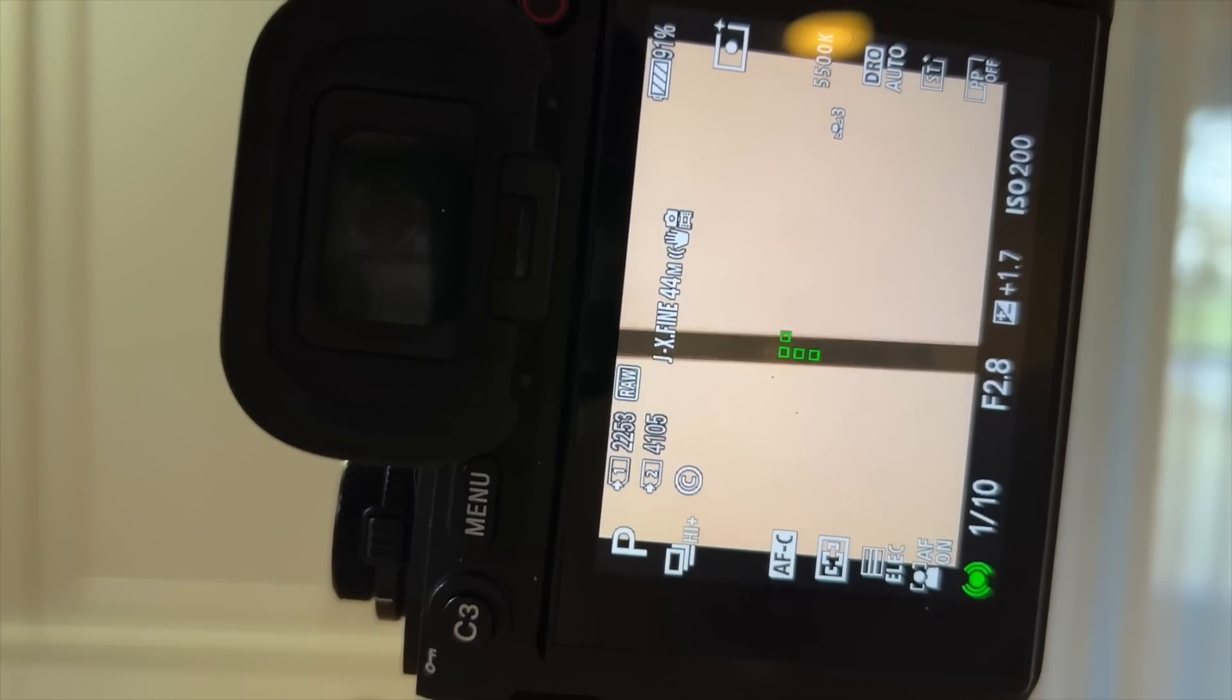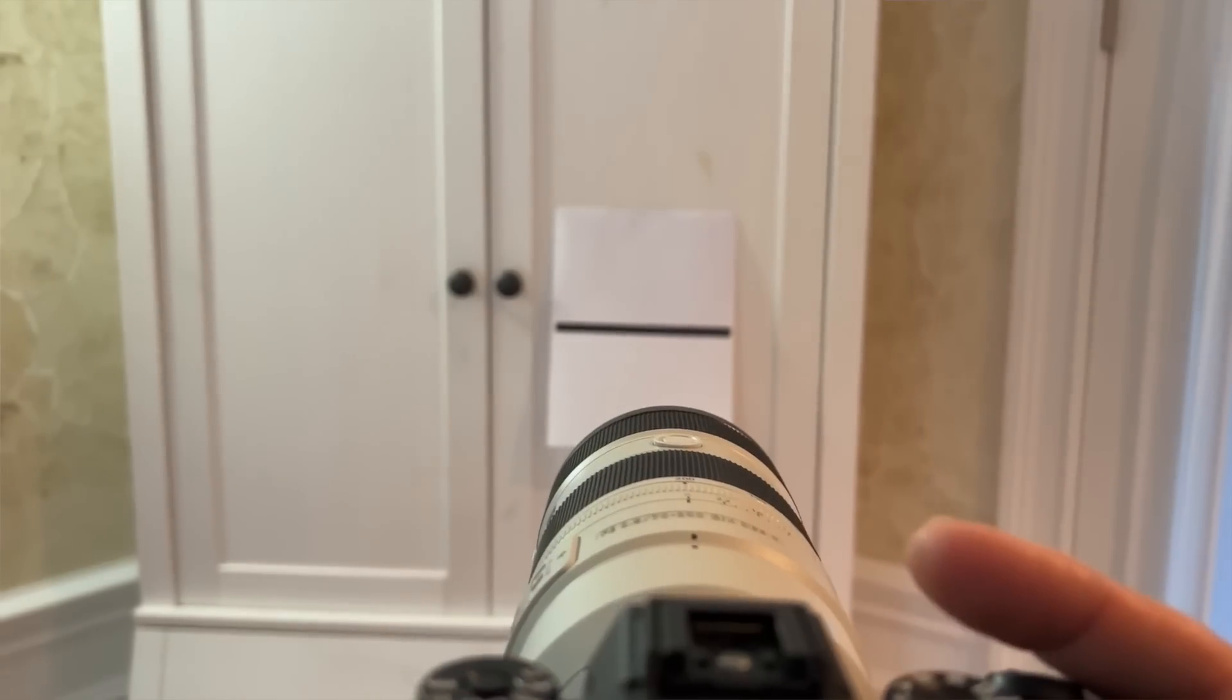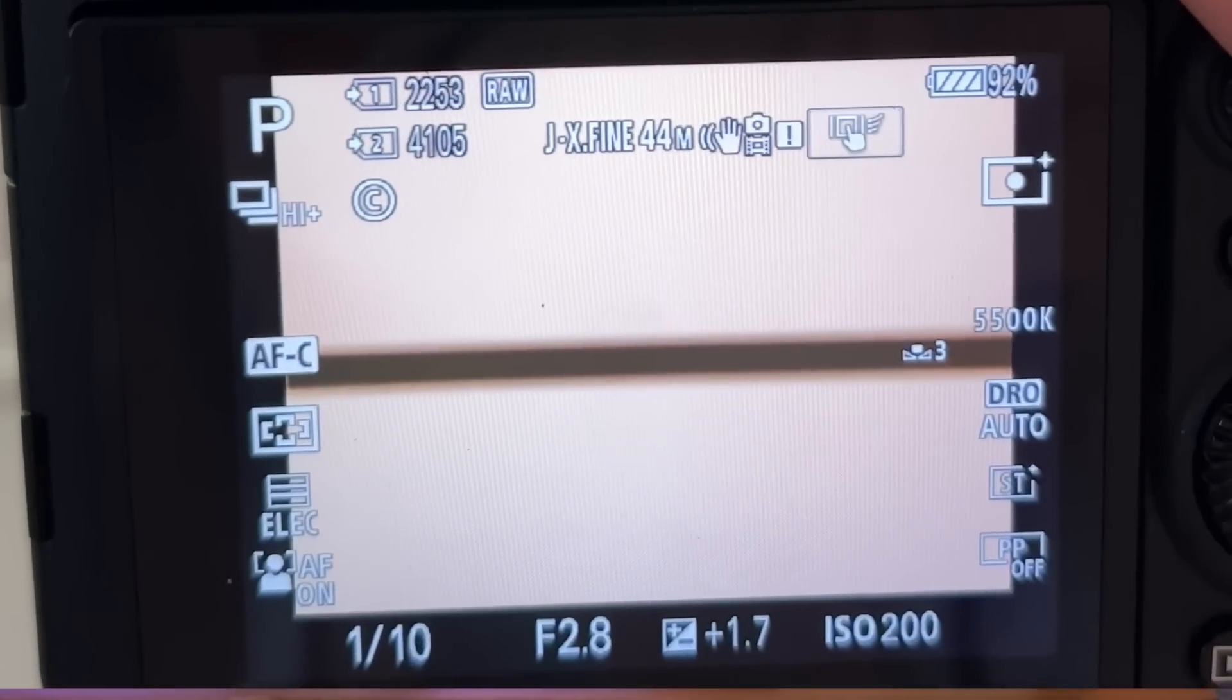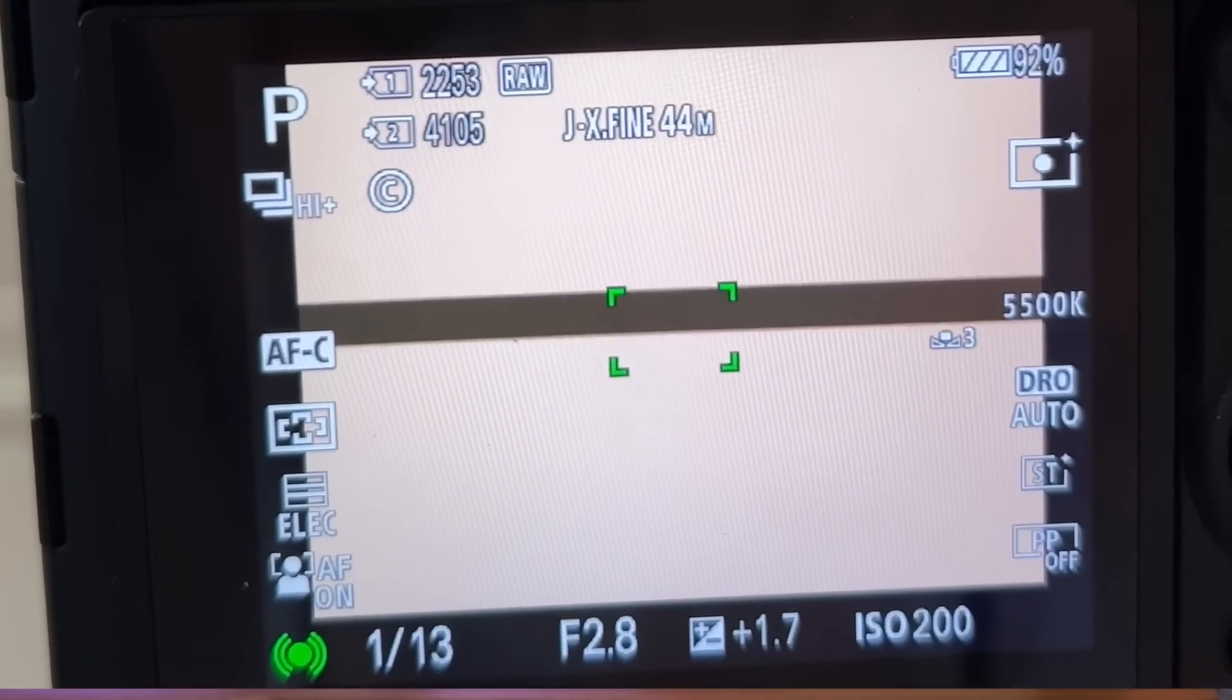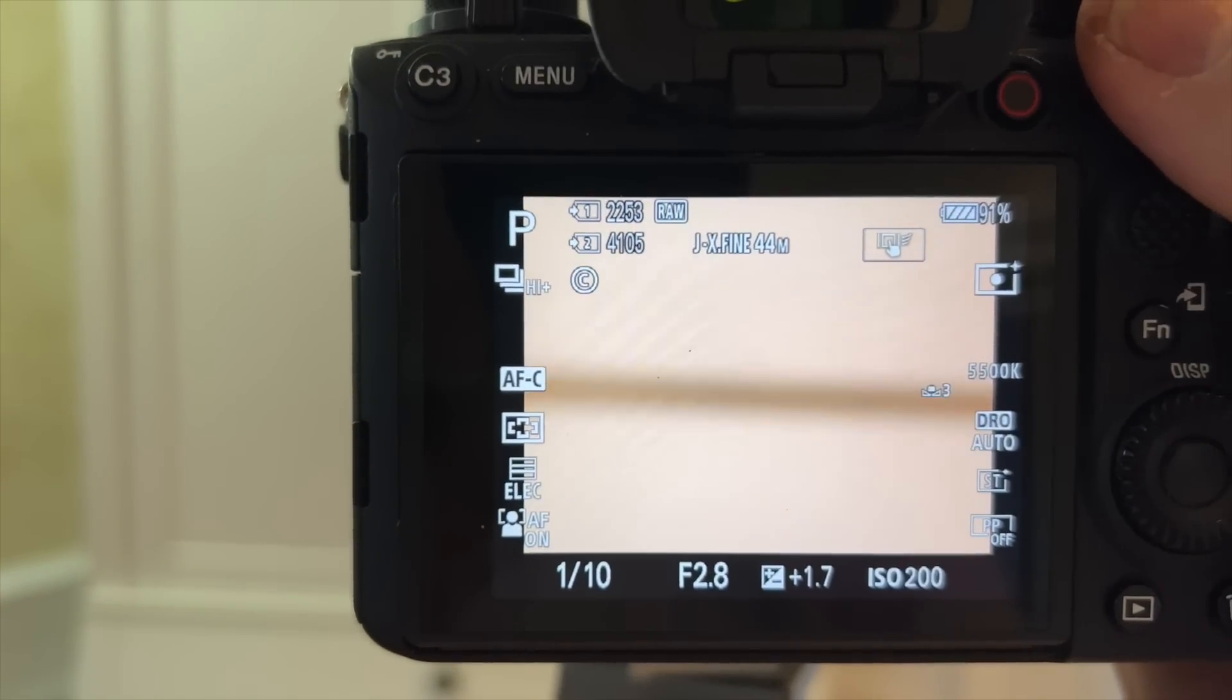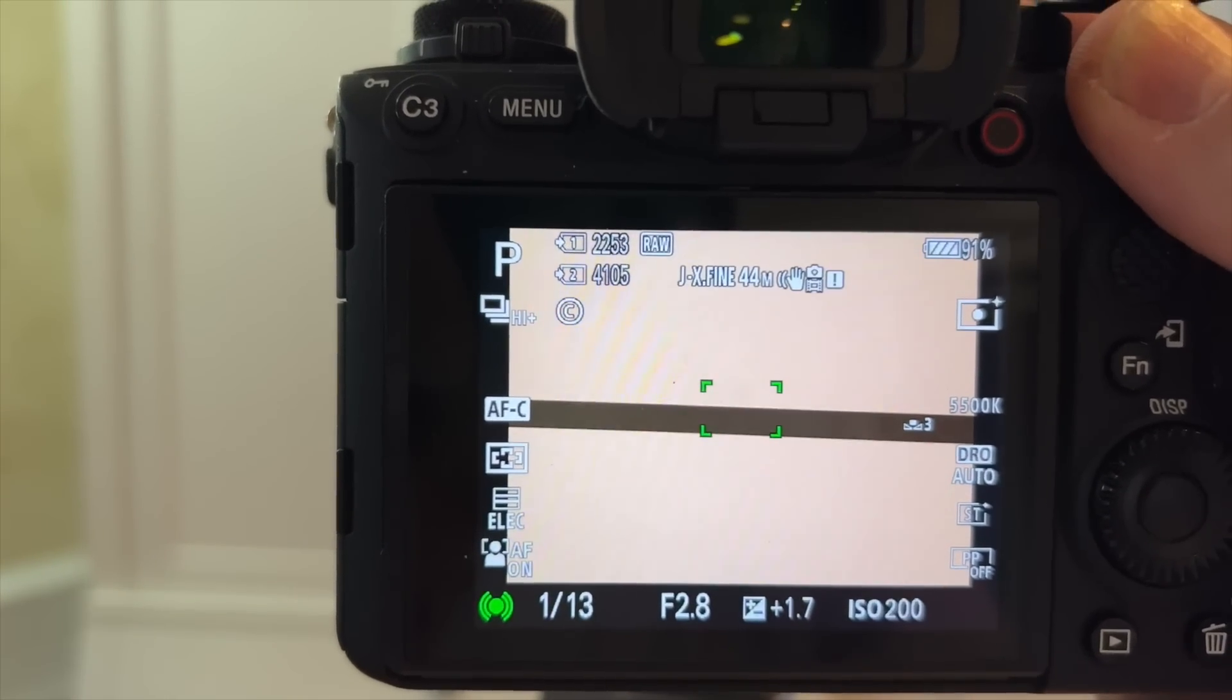Put up the Sony A1 and no problems focusing on a vertical subject, but again with the horizontal subject, well it hunts in and out. But then the Sony A1 seems to intelligently switch autofocus algorithms, perhaps switching to contrast detection autofocus and it does lock into focus.